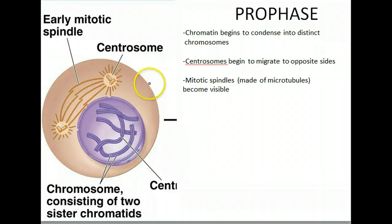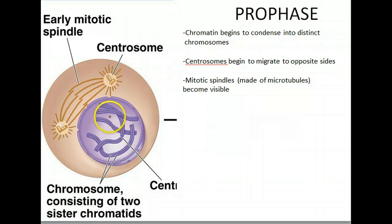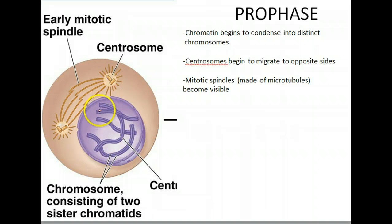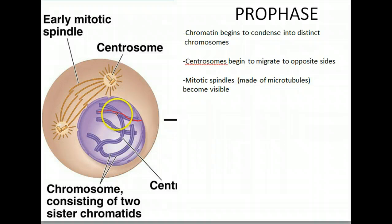There's a logic to the steps of mitosis. During interphase, all the DNA — the duplicated sister chromatids — exists as thin, barely visible strands. What happens during prophase is that this DNA starts to condense, so you begin to see chromosomes. These are chromosomes consisting of sister chromatid pairs that are becoming visually distinct because the genetic material is condensing.